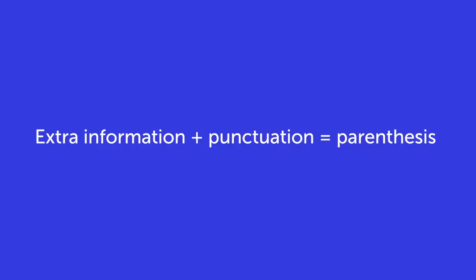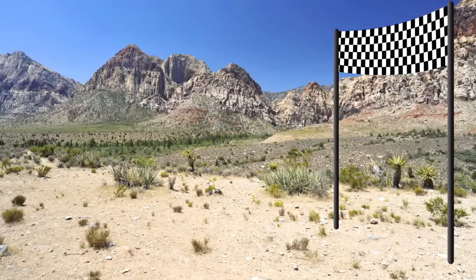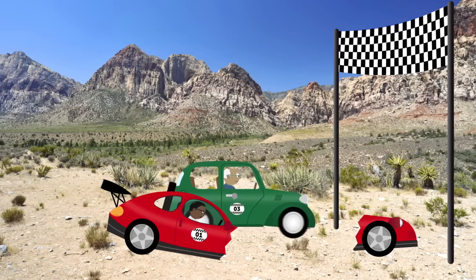You've been learning about adding extra information in sentences. Extra information plus punctuation is called parenthesis. The punctuation used for this is brackets, dashes or commas.